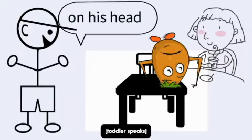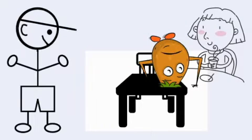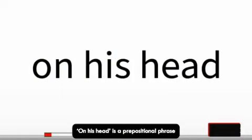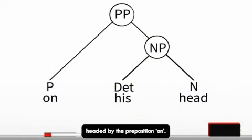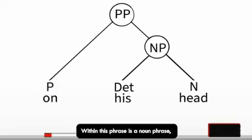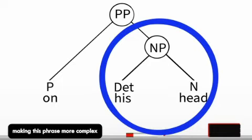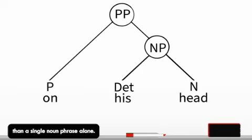On his head. "On his head" is a prepositional phrase headed by the preposition "on." Within this phrase is a noun phrase, "his head," the object of the preposition, making this phrase more complex than a single noun phrase alone.